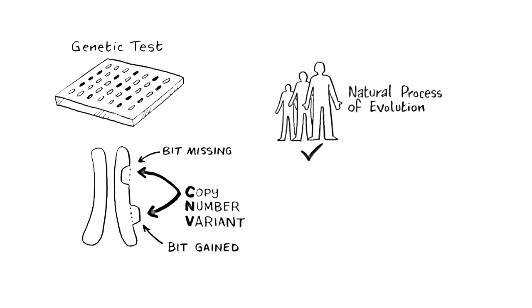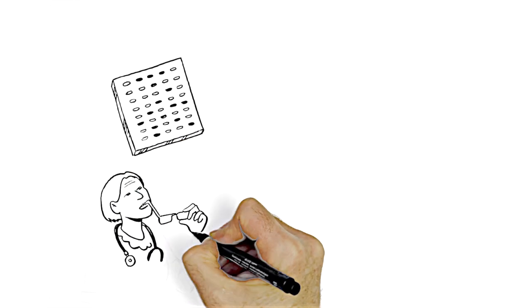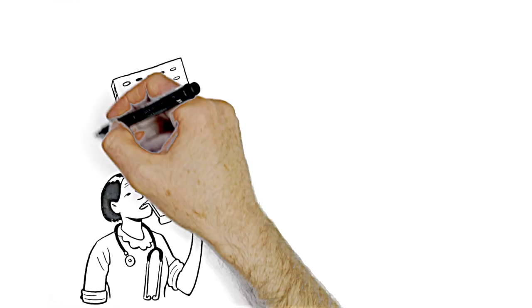However, if the CNV removes or adds an important gene, it can cause problems. Genetic test results are not always black and white. What are the rules of thumb when making sense of the test?